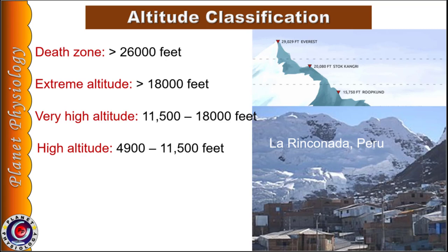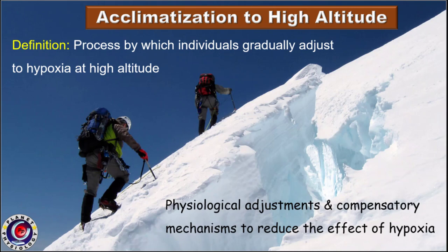In case of rapid ascent from sea level to high altitude, the body does not get sufficient time to adjust to hypoxia and the person suffers from acute mountain sickness, especially when the ascent is greater than 8,000 feet. However, if the ascent is gradual, even extremely high altitudes can be scaled without oxygen supplement. This process by which individuals gradually adjust to hypoxia at high altitude is termed acclimatization to high altitude.